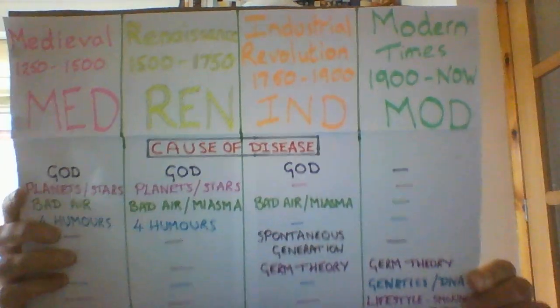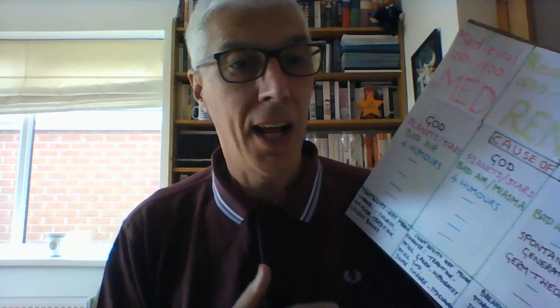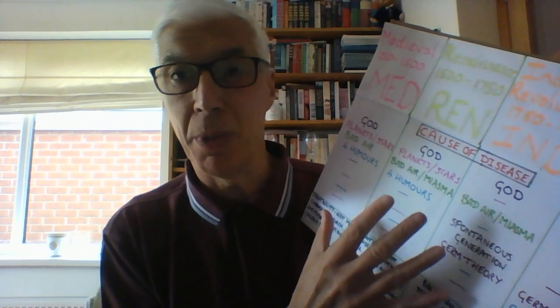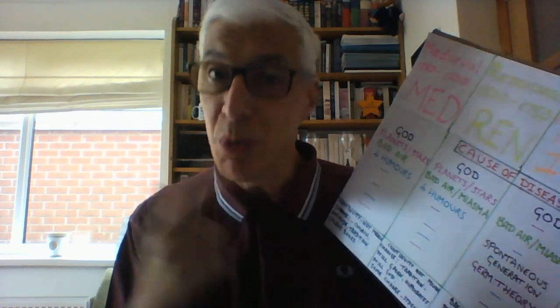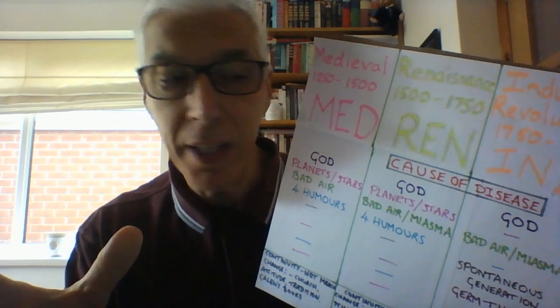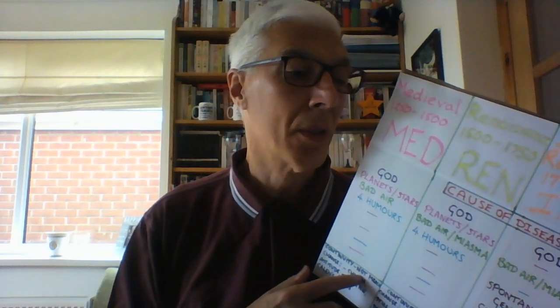Use mine or, better still, design your own, because there could be a question on this in your exam. They could say, for example: 'Explain one way how the cause of disease was different in this period,' or 'Explain one way how the cause of disease was similar in this period,' or 'Explain why progress in cause of disease happened over this period.' Or they might say: 'Not much progress happened in cause of disease over this time — how much do you agree?' Or: 'Advances in cause of disease were more significant in this period than that period — how much do you agree?'